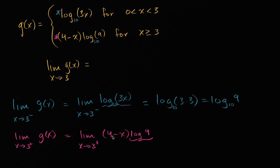And so this is actually defined for all real numbers. And so it's also continuous for any x that you put into it. So to find this limit, to think about what is this expression approaching as we approach three from the positive direction, well, we can just evaluate it at three. So it's going to be four minus three times log of nine. Well, that's just one. So that's equal to log base ten of nine.